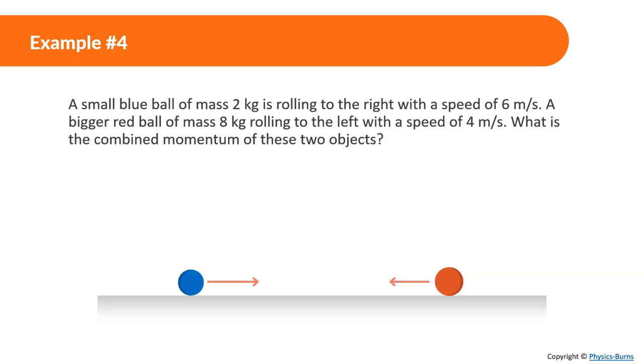Example number 4: a small blue ball of mass 2 kg is rolling to the right with a speed of 6 m/s. A bigger red ball of mass 8 kg rolling to the left with a speed of 4 m/s. What is the combined momentum of these two objects? We're finding the total momentum. P blue ball plus P red ball equals total momentum. Momentum of the blue ball is 2 times 6 plus momentum of the red ball is 8 times negative 4 because it's going to the left. I get negative 20 kg⋅m/s. And this is a good place to say that momentum is a vector, so things can be negative or positive to imply direction.